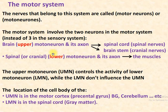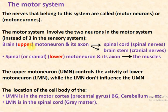With the motor system, there are two sets of neurons. The upper motor neuron is present in the brain, especially in the motor cortex, present in the pre-central gyrus of the cerebrum. From these upper motor neurons, nerve fibers are introduced which form a tract, and you can see these nerve fibers and tracts in the spinal cord.